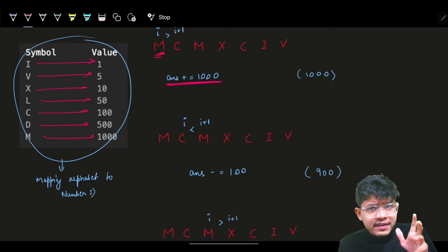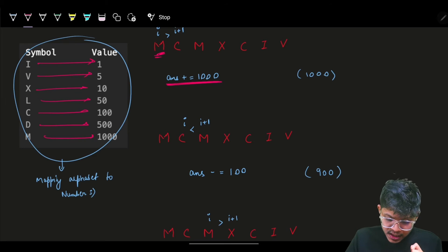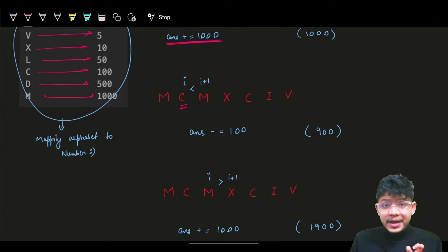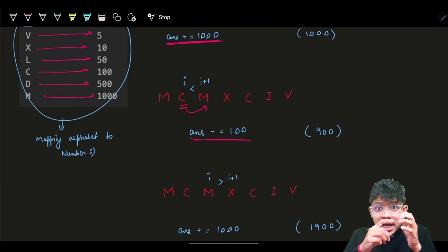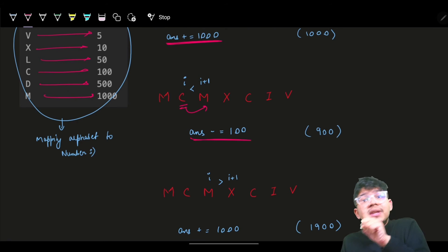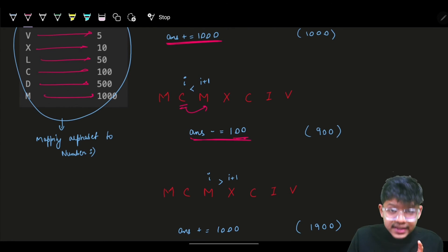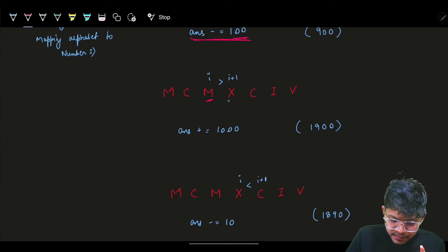Next I go to my next step. I check - C is less than M, so I subtract C. Now I'm at M - M is more than X, so simply add the value corresponding to M. The current answer is on the right side, which I keep building.